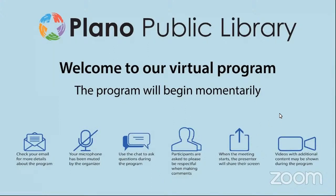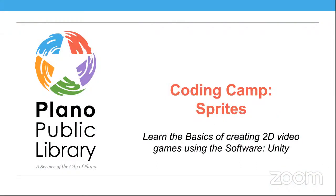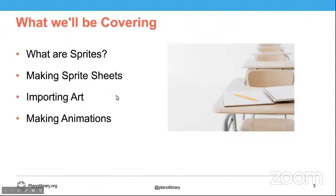With all that, let's get started. So for today's class, we're going to be doing sprites. We're going to be covering how to draw sprites, how to put them into Unity, and how to animate them. We'll be talking about what sprites are — sprites are images that basically make up characters and objects in the background in 2D games. We're going to be making sprite sheets, which showcase the animations for each character broken down into individual sprites. Then we'll show how to import the art into Unity and turn it into animations.